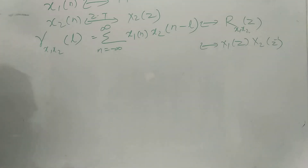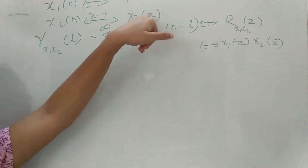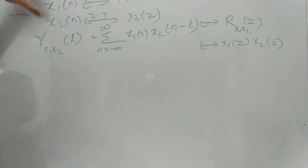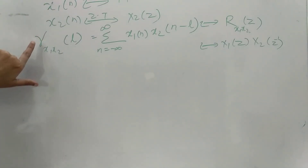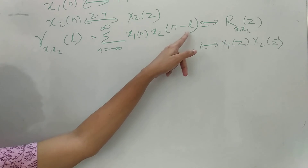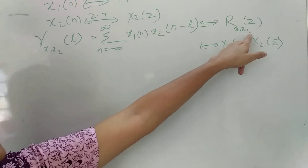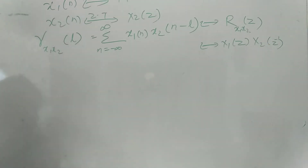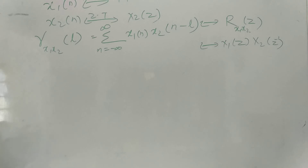So the correlation: X1(N) gives Z transform X1(Z), X2(N) gives Z transform X2(Z). The correlation between these two signals X1(N) and X2(N) is given by R_X1X2(Z) equals X1(Z) times X2(Z inverse). Cross-correlation can also be done using polynomial multiplication or by inverse transforming the signals.